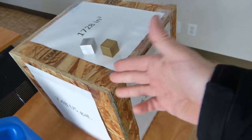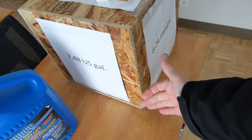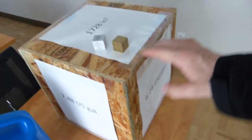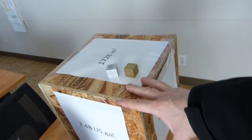This plywood, OSB, whatever, cube here is exactly one cubic foot. We know this because it's one foot in depth, one foot in length, and one foot in width. It has a volume of one cubic foot.